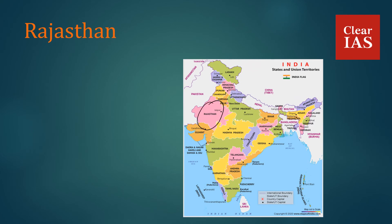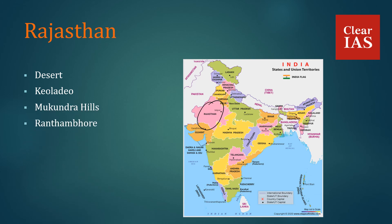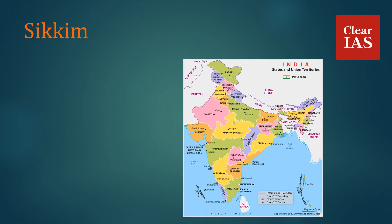In Rajasthan, we have Desert National Park — which is famous for its population of Great Indian Bustards — Keoladeo National Park, Mukundra Hills, Ranthambore National Park, and Sariska National Park. In Sikkim, we have Khangchendzonga National Park, which is also a UNESCO World Heritage Site.